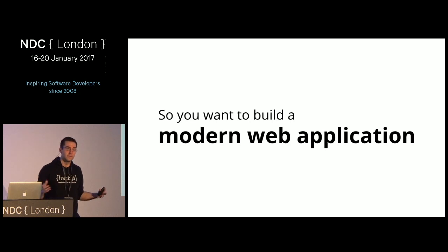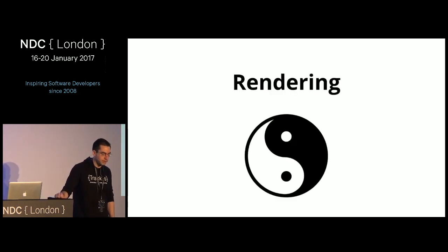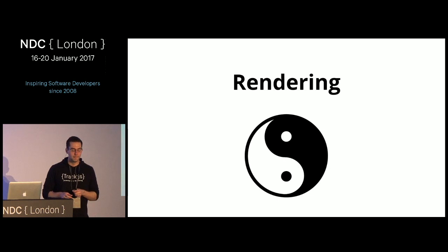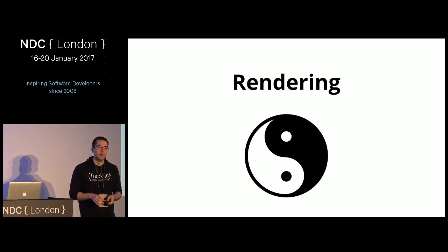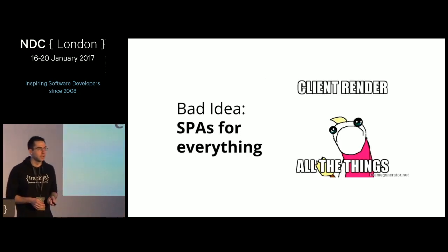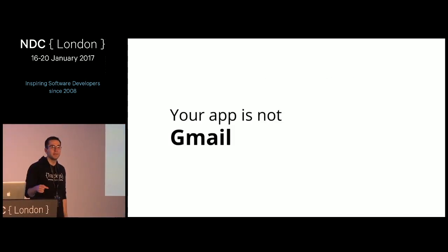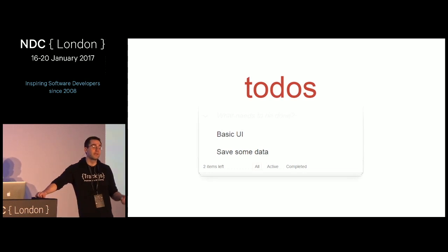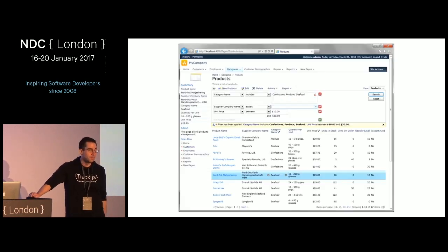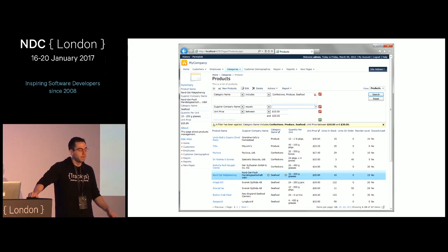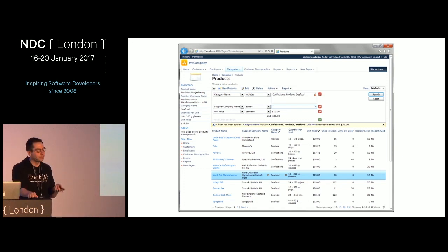I want to talk about some good ideas and some bad ideas in the JavaScript landscape today, and how you can avoid the landmines. The first thing you need to decide when building a web application is how you're going to render it. Everybody right now is saying single page applications are the way, and I'm here to tell you I don't think that's true at all. Just like lobotomies were a bad idea in Victorian-era medicine, single page applications for everything is a really bad idea.